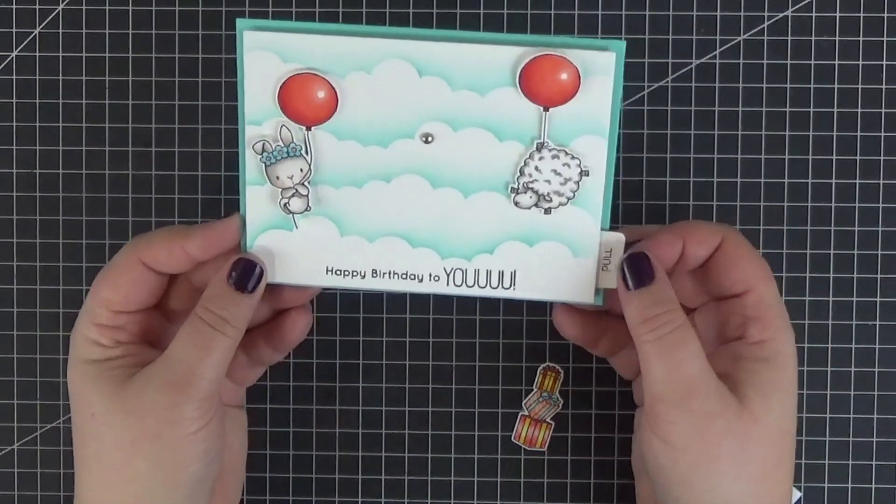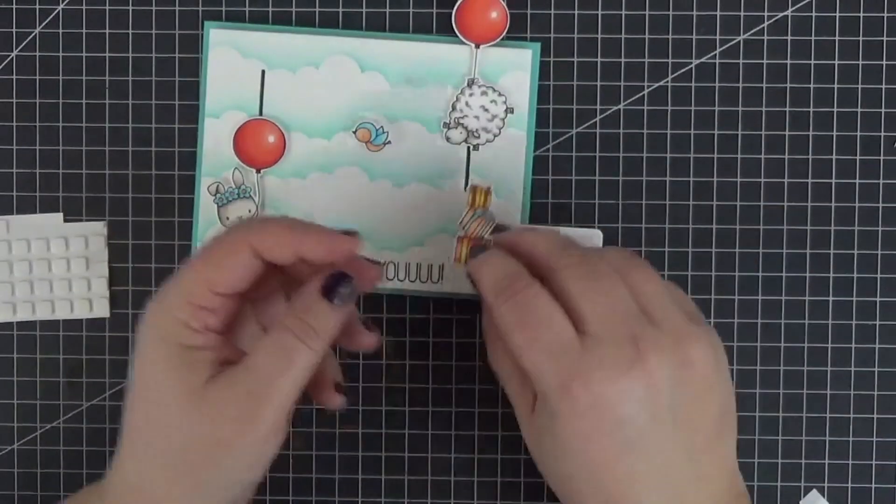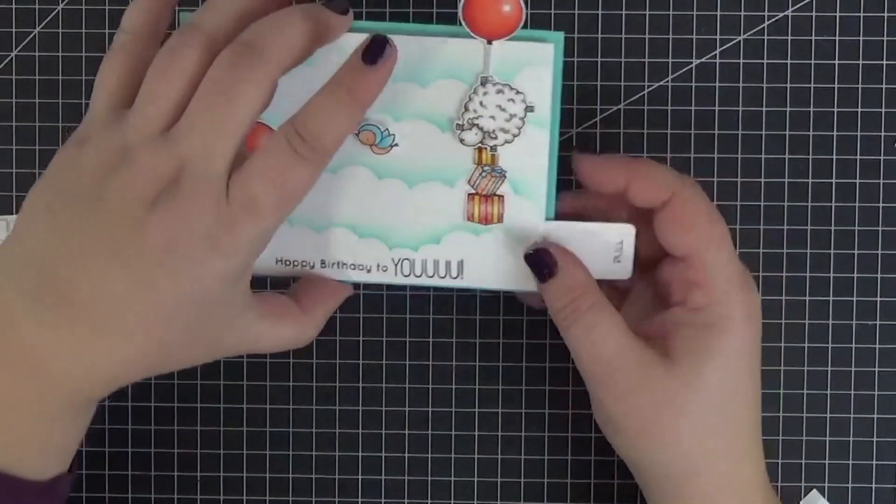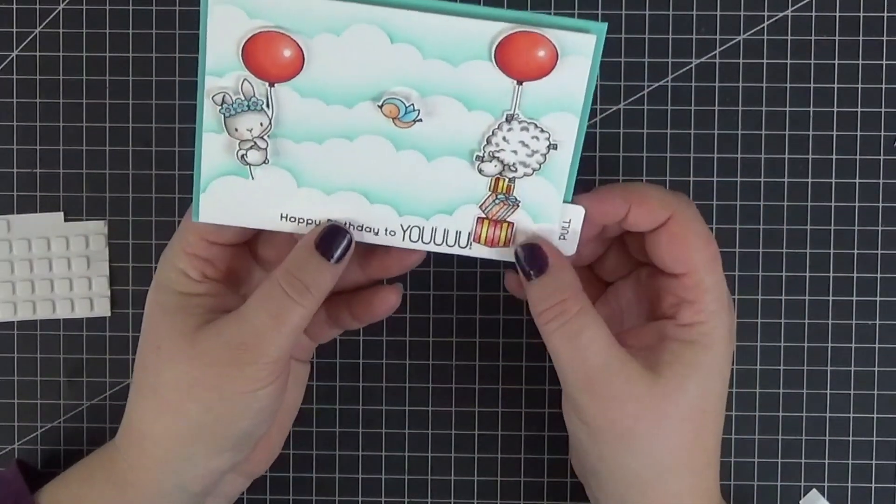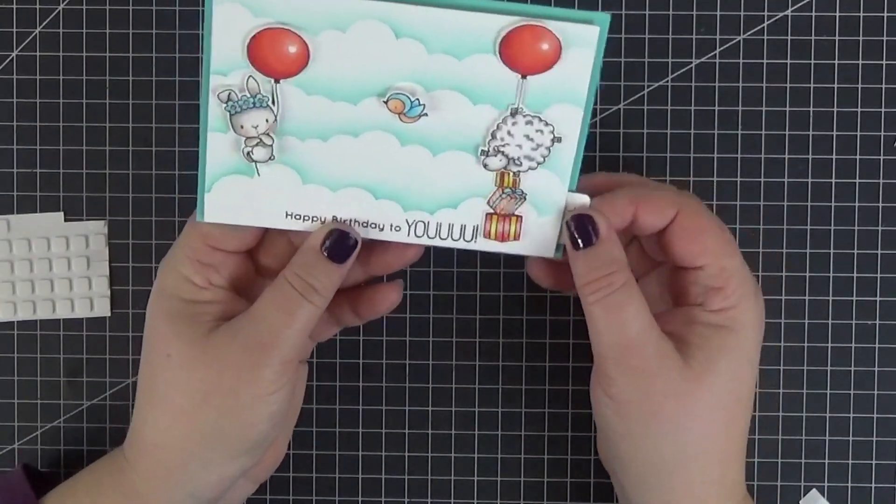If you prefer that it doesn't, you can move it a quarter of an inch downwards. I just wanted to add the stack of presents to hide the right slit all the way. Unfortunately, it's impossible to do the same with the bunny and the left slit is revealed when pulling the tab.